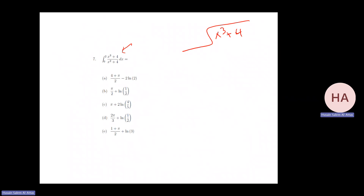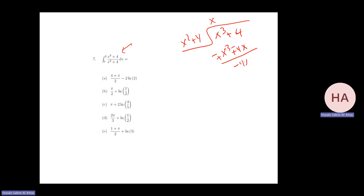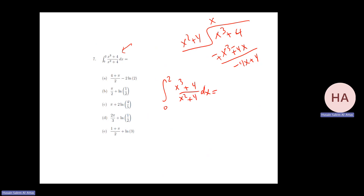Let me do it: x squared plus four divided into x cubed plus four x. That gives x, then minus four x plus four. So the long division is just rewriting the function. x cubed plus four over x squared plus four can be rewritten as x minus (4x − 4) over the denominator.